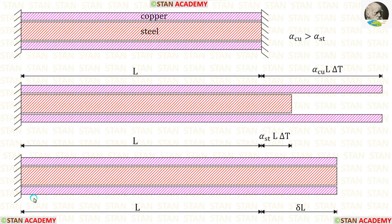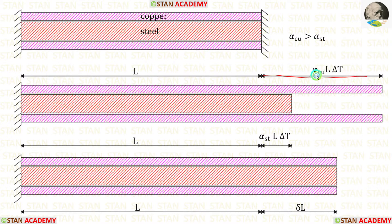In the first figure, the rod is rigidly fastened, so when the temperature increases there will be no change in length. Suppose the bar is free to expand, copper will be expanding more than steel because the alpha value for copper is higher than the alpha value for steel. The change in length in copper is α_Cu × L × ΔT, and the change in length in steel is α_ST × L × ΔT. In reality it won't happen like this.